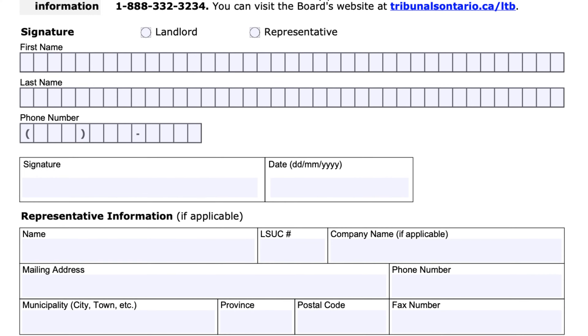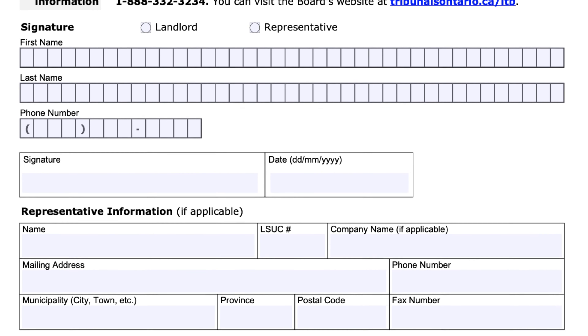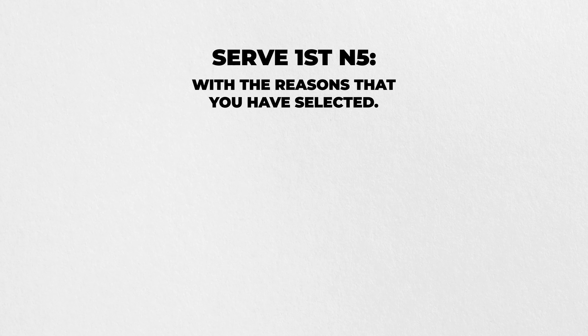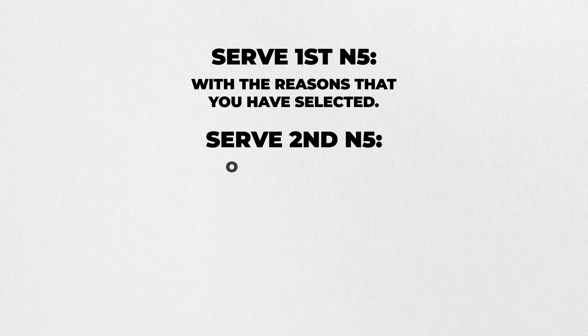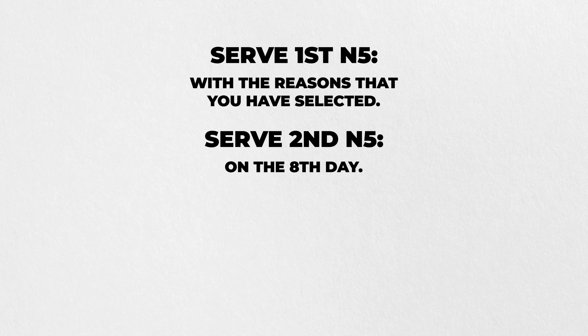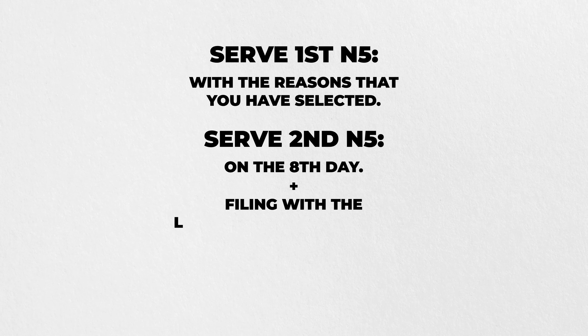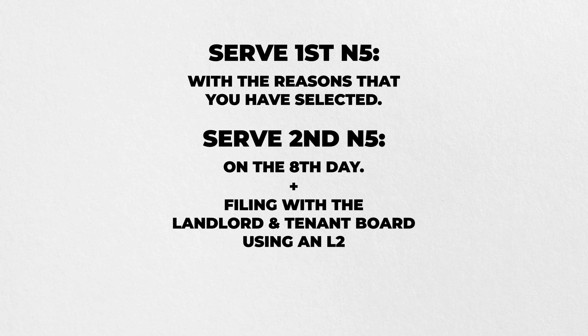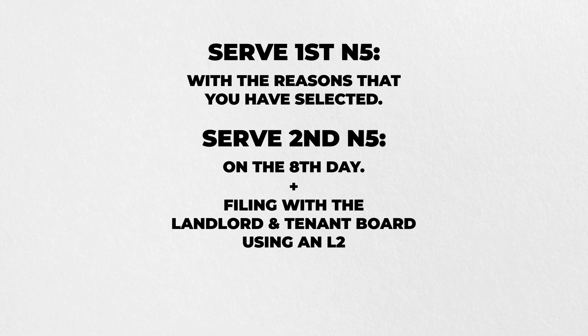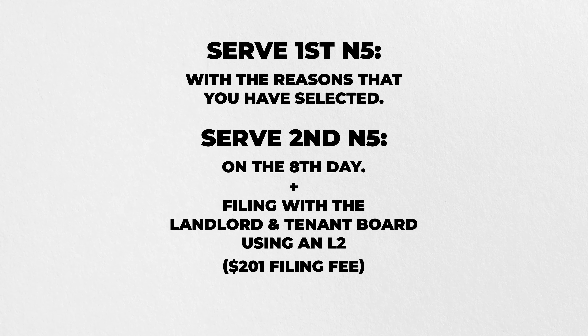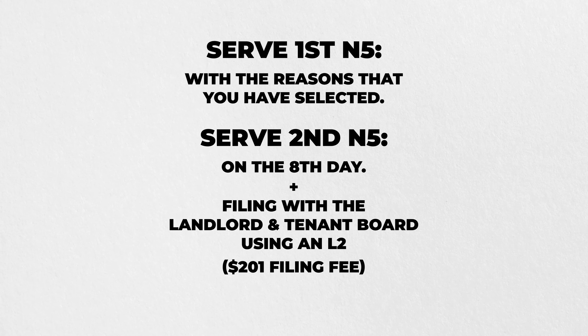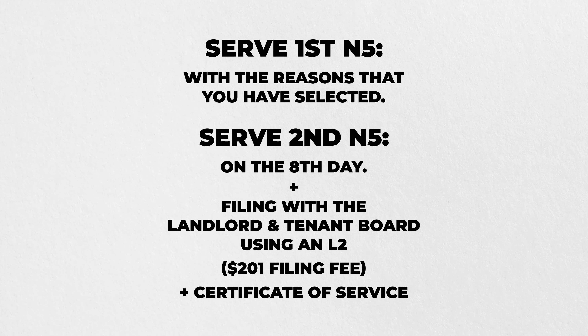Finally, finish the form off with all of your personal information at the end. The overarching process is not that complicated: serve your first N5 with the reasons you've selected, then serve your second N5 on the eighth day, and subsequently file with the LTB using an L2. Remember you'll need to pay a $201 filing fee to the board and also use a certificate of service — make sure to cover all these bases.